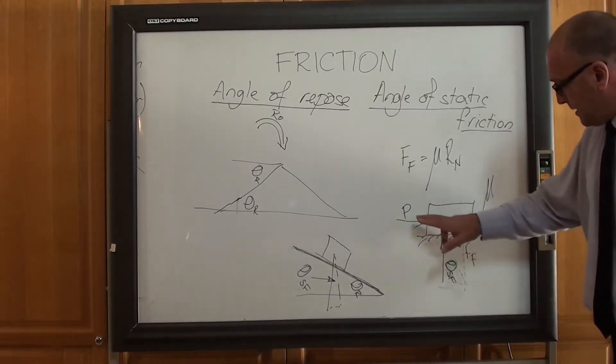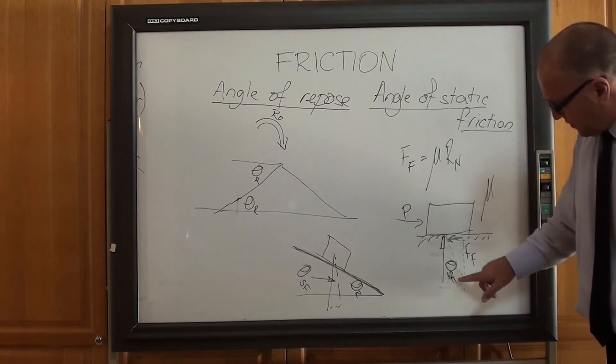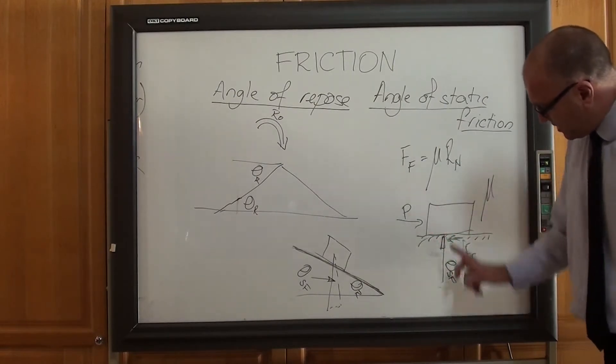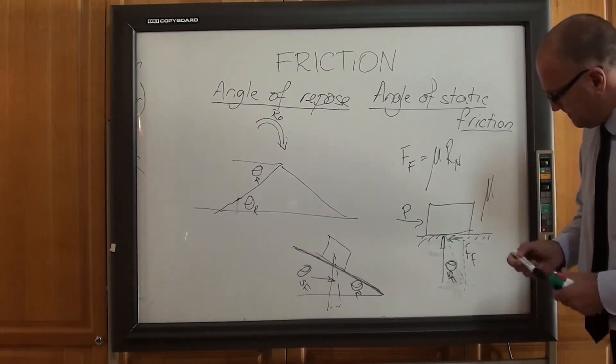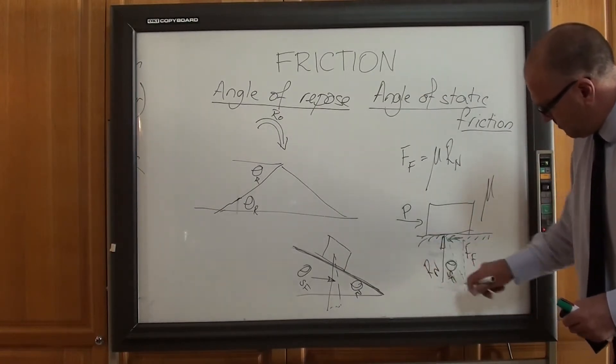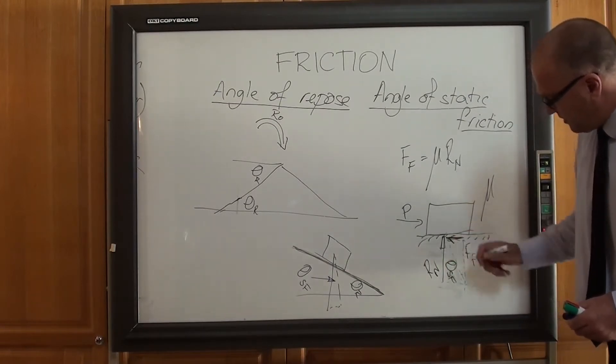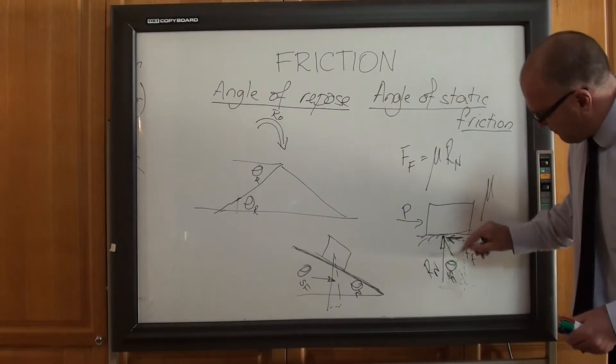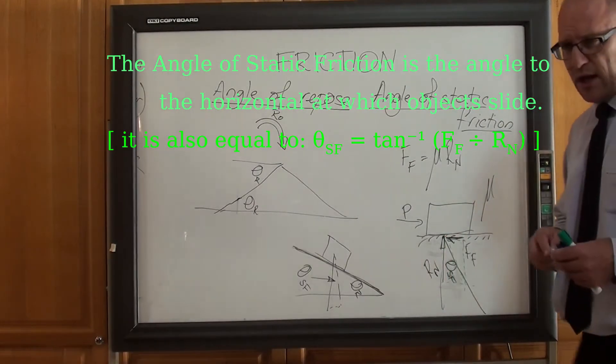But if you have a look here, the coefficient of friction is down here. I've got weight pushing down, a normal reaction, that's RF, pushing up, got the force of friction pushing to the left, and the angle of static friction is the angle that's laid back at. That's actually how it's measured.